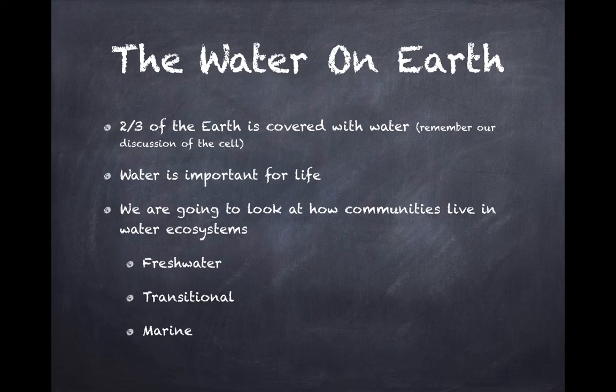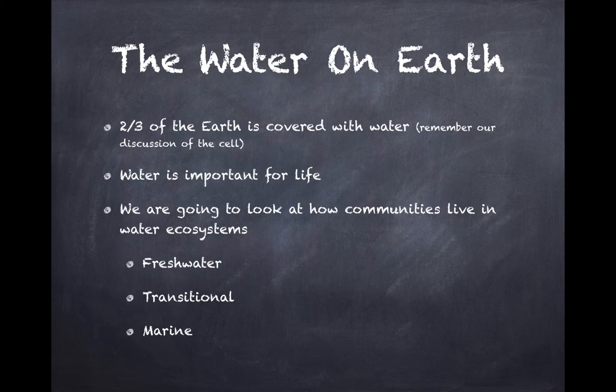We're going to look at how communities live within these water ecosystems. There are three major groups: freshwater, transitional, and marine. Freshwater is a low-salt-content water. Transitional is in between freshwater and marine. And marine is the saltwater environment that we associate with the oceans.